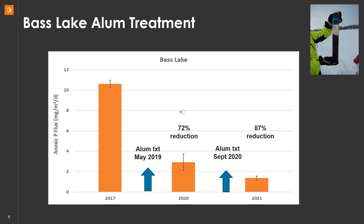This figure shows additional data from Bass Lake — specifically anoxic phosphorus release rates from sediment cores incubated in the lab at UW Stout by Bill James. The release rate in 2017 was over 10 milligrams per square meter per day. The first half of the alum application was applied in May 2019, and the following year we measured a 72 percent reduction in the phosphorus release rate from the sediments. The second half of the application was applied in September 2020, and we saw an 87 percent reduction in sediment cores collected the following year.